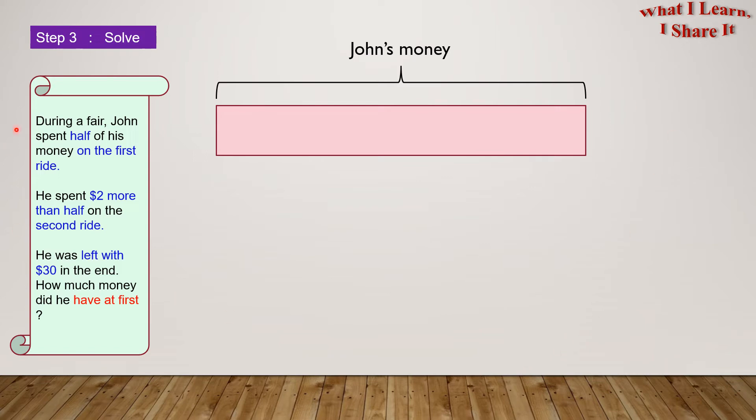Step 3. Solve. Here, I've drawn a box to show John's money. Half of the money goes to the first ride. And this is the remaining money now.